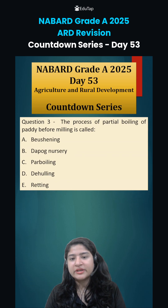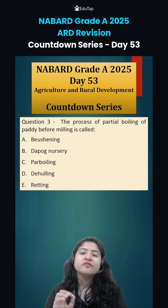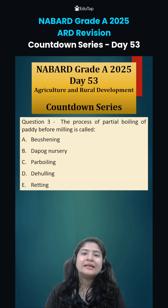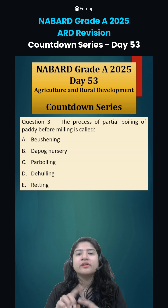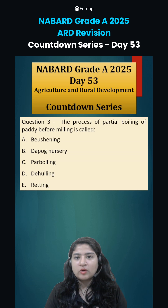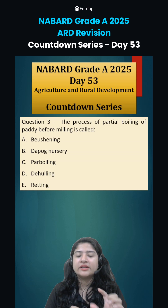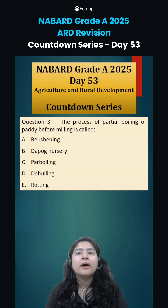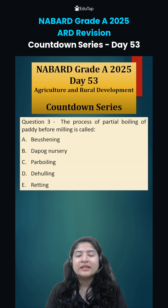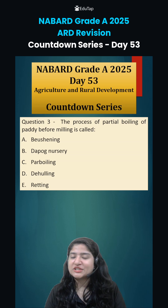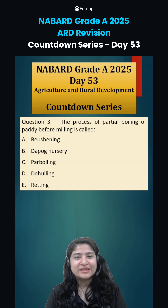Coming to question number three: the process of partial boiling of paddy before milling is called — milling being the removal of the brown husk in paddy. Tell the answers in the comment section and we will discuss them in the next class. Thank you.